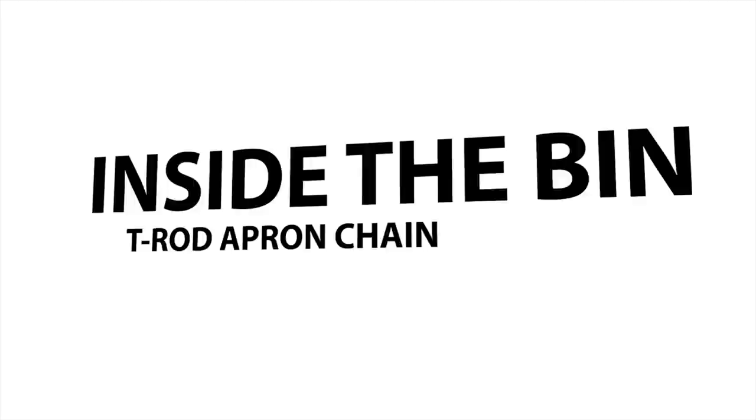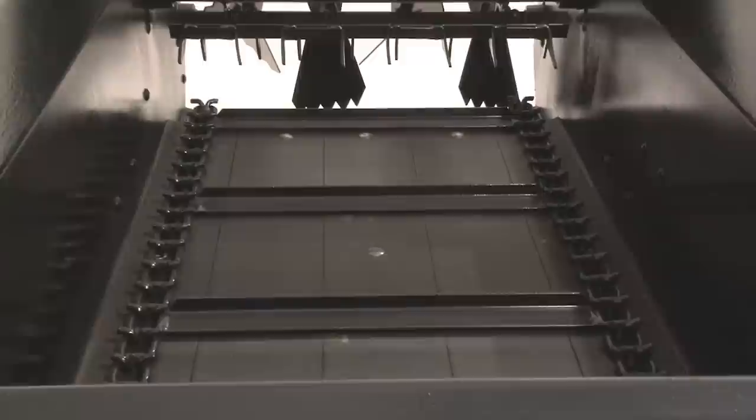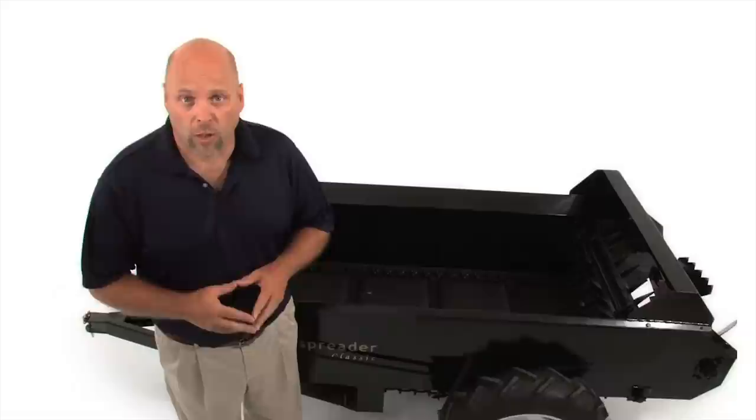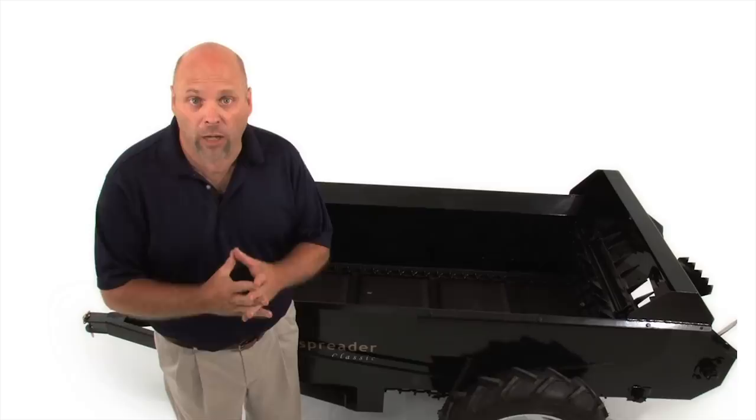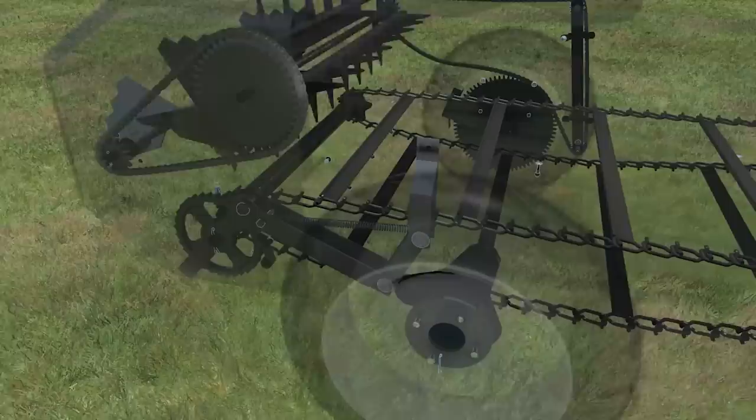The ABI Apron Chain is made with a T-Rod design. This T-Rod design is four times stronger than any other design in the market. What that means for you is that this T-Rod design nearly eliminates breakage and stretch under normal use. So this reduces your frustration of downtime and an apron chain breaking under a normal load. Remember that the apron chain has four different speeds at which it moves the manure back to our industry exclusive shredder bars.